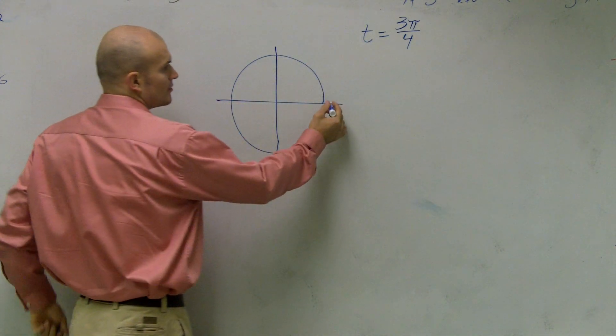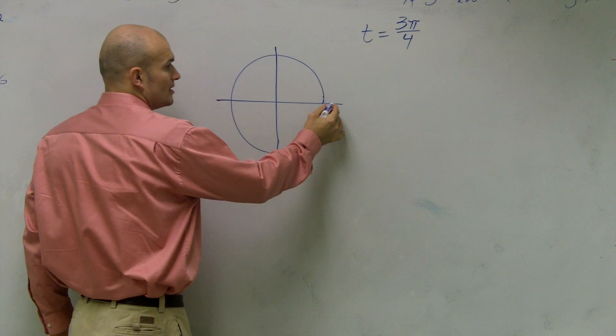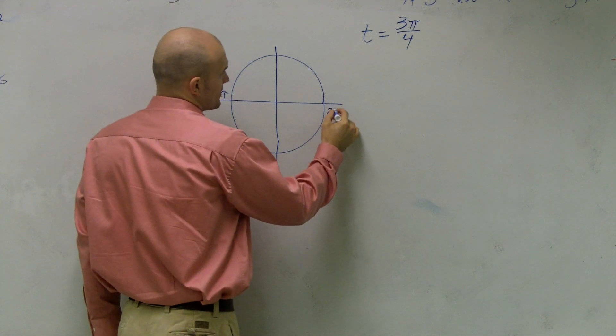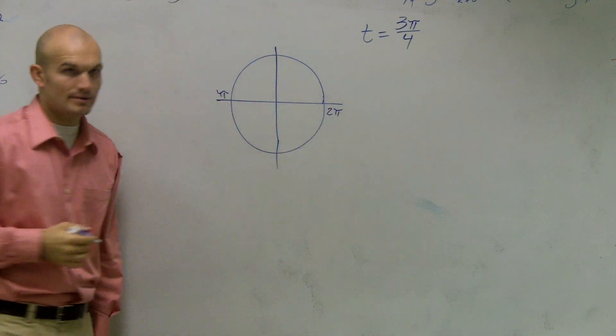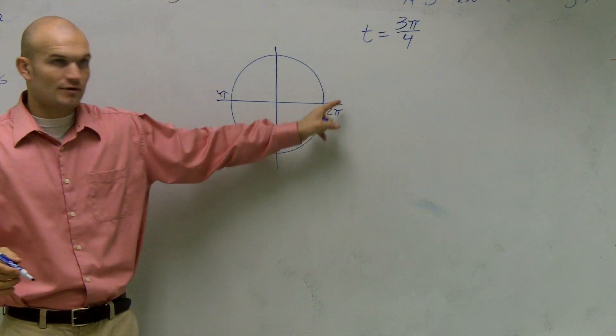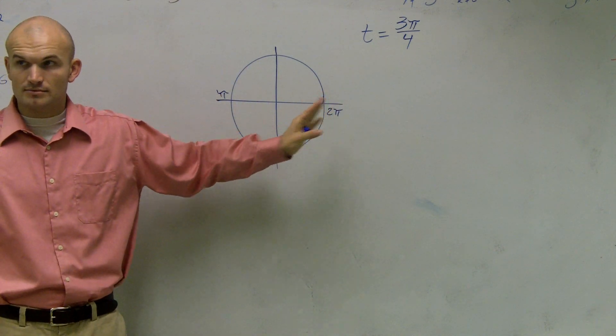A couple things to remember, guys. If I start here, halfway around is what we call pi, and then all the way around again is what we call 2 pi. If you start here and you go in the positive direction, that's pi. You go there, it's 2 pi.